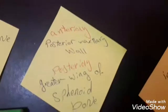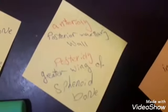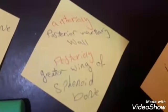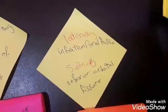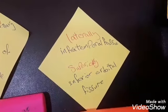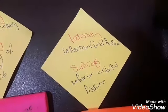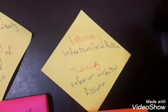Anteriorly there is the posterior maxillary wall, and posteriorly there is the greater wing of the sphenoid bone. Laterally it communicates with the infratemporal fossa, and superiorly there is the inferior orbital fissure.